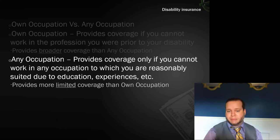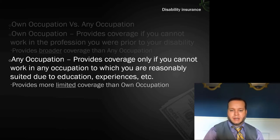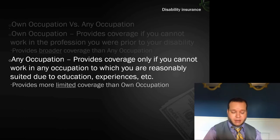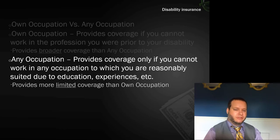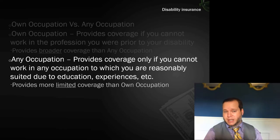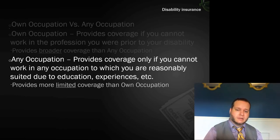Generally speaking, an own occupation policy is recommended — it's much more likely to pay out if you need it. That does make it more expensive, so you need to think about your circumstances. For a professor, if I can't teach at a university I probably can't teach at a high school either or work as a professional financial planner, so any occupation might make sense for me. But for most people, own occupation provides better coverage and is worth paying extra for.